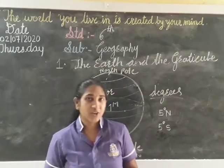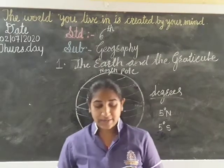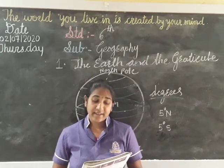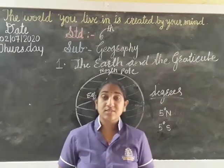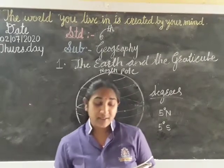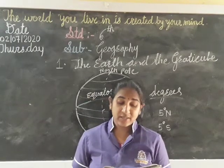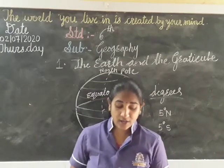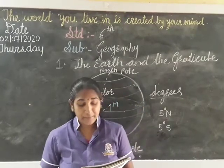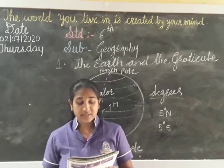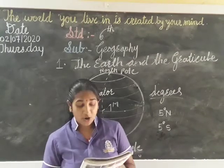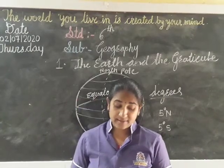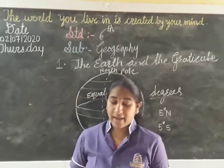Now I think all of you understood what is the equator. A line drawn through all the places located to the north of the equator at an angular distance of 30 degrees is the 30 degree north parallel. Hence, all the places on this parallel will have the same latitude of 30 degree N. New Orleans in North America, Kello in Africa, and Basra and Lhasa in Asia are all located on the 30 degree parallel. The same concept holds good for all other parallels.